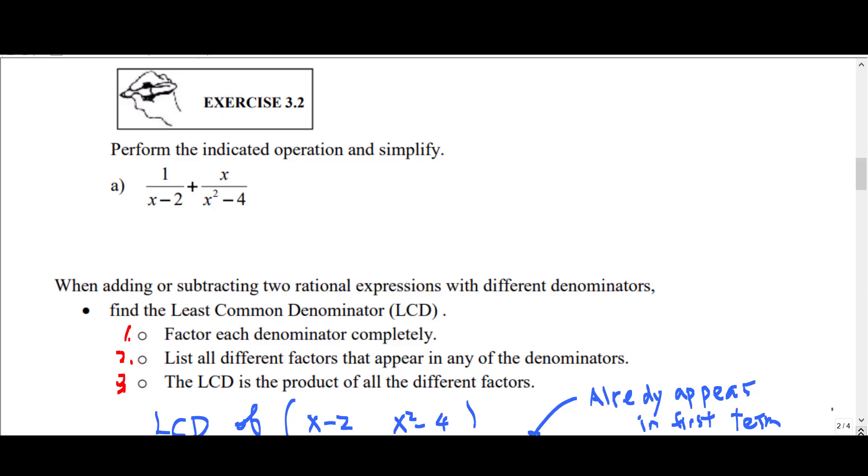This is exercise 3.2 A. Perform the indicated operation and simplify: 1 over x minus 2 plus x over x square minus 4.